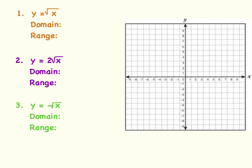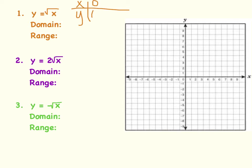Let's start out with graphing the parent radical function, which is y equals the square root of x. I'm going to create a table, come up with an x value, and then find out what the y value will be — those will be my ordered pairs that I graph. If x is 0, then the square root of 0 is 0, so there's my first ordered pair: (0, 0).